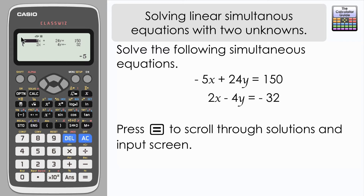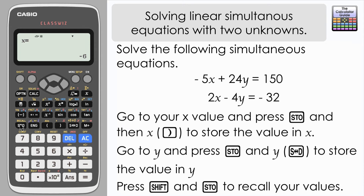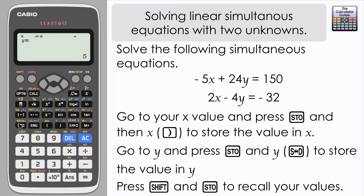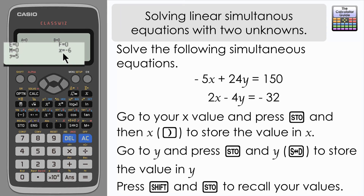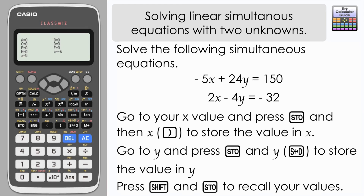You can press equals again and scroll back to your input screen if you want to make any further changes. If you press equals again, you can store the x and y values to memory. Press store and then choose x, which is the right bracket, and that should store our value to x. Then press store and the y button, which should be SD, and that will store your value to y. If you press shift and then store, which is recall, you should be able to see that the values for x and y are stored in the calculator memory for further use in continuing calculations.